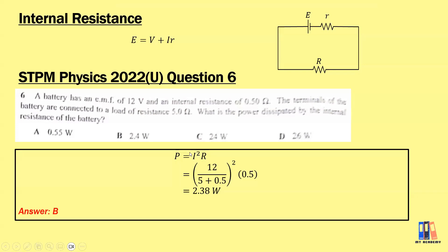We need to find the current, where the current equals E divided by the total resistance. So we have 12V divided by 0.5 ohm plus 5 ohm — that gives the current in the circuit. Then I squared multiplied by the internal resistance gives a power of 2.38 watt. Answer is B.